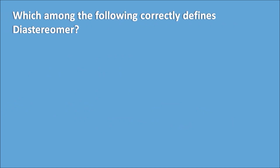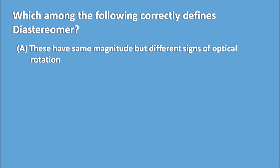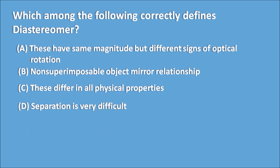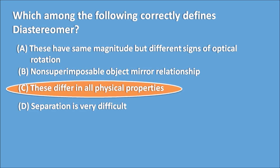Which among the following correctly defines diastereomers? A: they have same magnitude but different signs of optical rotation; B: non-superimposable object-mirror relationship; C: they differ in all physical properties and separation is very difficult. If you know the properties of diastereomers, you can say they differ in all physical properties and can be easily separated. So C is the right answer.